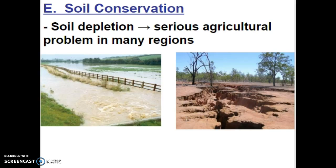Soil is very important, especially in the agricultural community, since that's how we grow our food. Soil depletion is a very serious agricultural problem in many regions. Farmers have to protect from flash floods, which can take away their topsoil — the O and A layers. Wind erosion can also take away the topsoil layers.